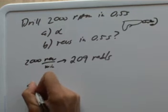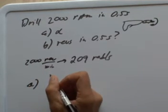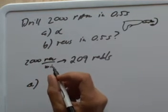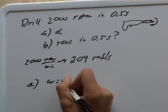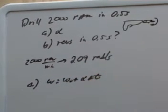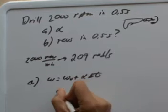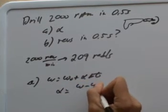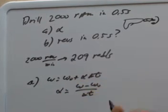How would you find the alpha in part A? Well, we can drop down to equation 2 which we have for this type of work here, which says that omega is omega naught plus alpha delta T. If I solve this for alpha, I'll get that alpha is omega minus omega naught over delta T.